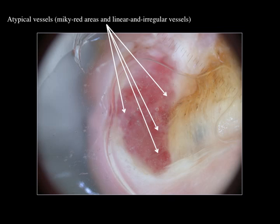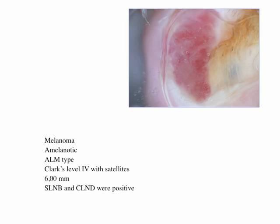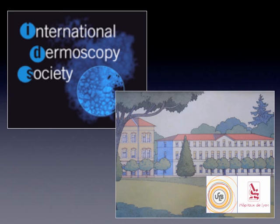You can also see a blue spot, which can be considered a remnant of pigmentation. Atypical vessels plus remnants of pigmentation are highly suggestive of melanoma — and unfortunately this was melanoma, very thick at 6 millimeters Breslow thickness. The patient had a positive sentinel lymph node and complementary lymph node dissection was also positive. Unfortunately, this patient died within one and a half years after the initial diagnosis. Thank you very much, goodbye.